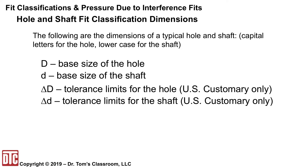The following are the dimensions of a typical hole and shaft as given in the tables. Capital D is the base size of the hole, and lowercase d is the base size of the shaft — just the nominal size. Delta D max and delta D min are the tolerance limits for the hole, and delta d max and delta d min are the tolerance limits for the shaft, for the US customary system. The metric system gives you the actual diameters of the shafts directly.